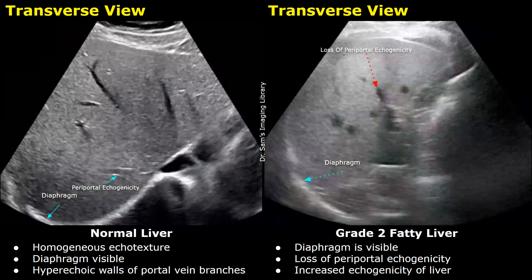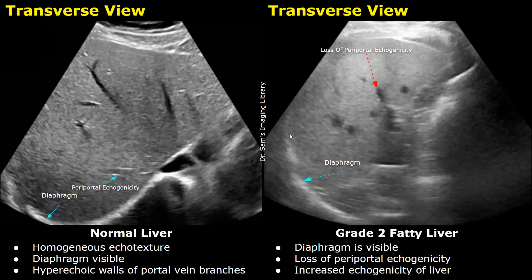This is another image showing a grade two fatty liver. Increased echogenicity of the liver is noted and we do not see the hyperechoic borders of portal vein branches, but we can see the diaphragm — it is visible. So this will be a grade two fatty liver.